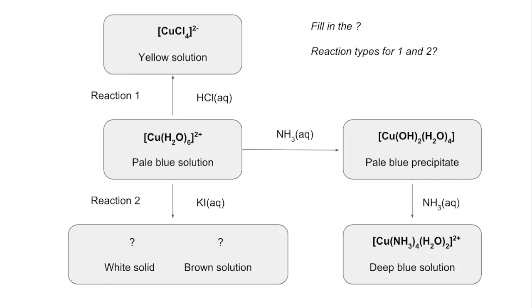The final reaction at the bottom on the left hand side, if you add aqueous KI to the hexa aqua copper 2 plus, that white solid, if it's got no color it's going to be Cu1, so Cu1 iodide, and the brown solution is going to be aqueous iodine. What happened in reaction 1? We've got ligand substitution. And reaction 2 is a redox reaction, and that's because the copper has been reduced from oxidation state plus 2 to plus 1, the iodine has been oxidized from oxidation state negative 1 in KI to 0 in I₂.